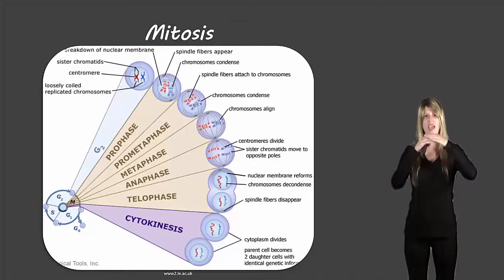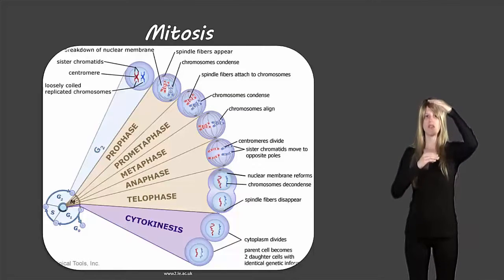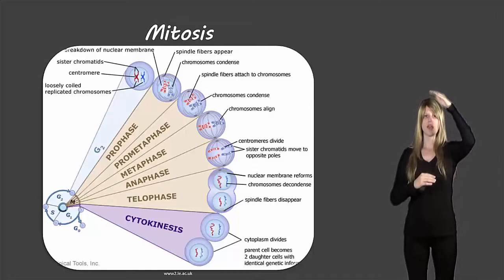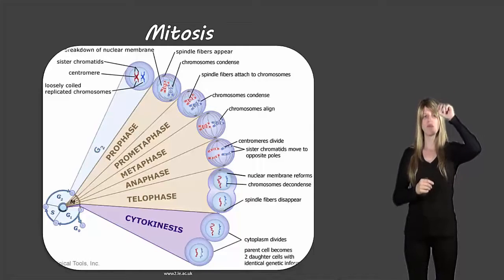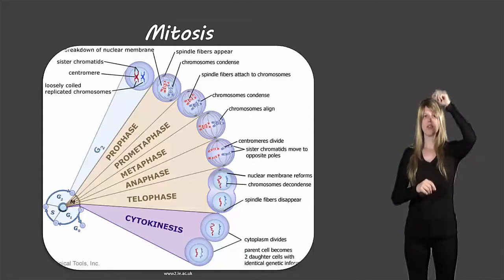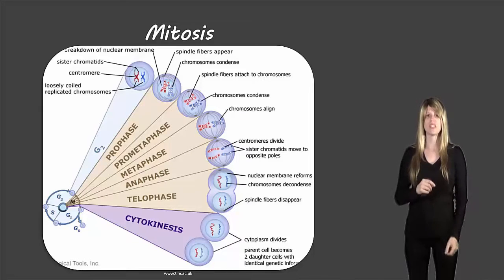In anaphase, one of each of the sister chromosomes starts to go toward the separate poles of the cell. They get pulled apart by those spindle fibers, so that one is at one pole and the other is at the other pole, and that happens for each of the different chromosomes.